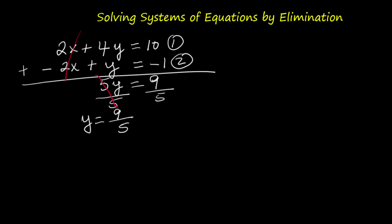Let's plug this back into the second equation: negative 2x plus y equals negative 1. Replace y with 9 over 5: negative 2x plus 9 over 5 equals negative 1.